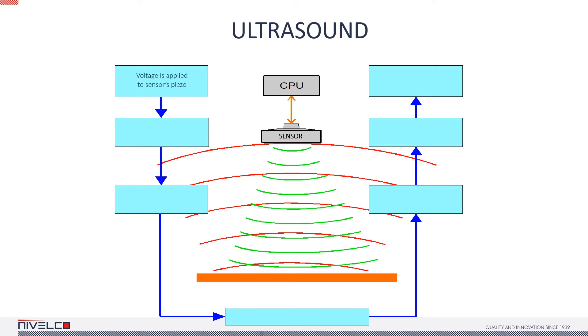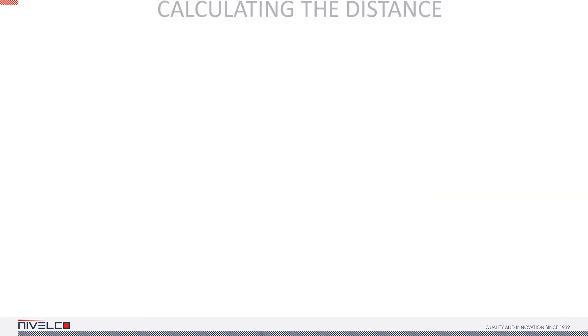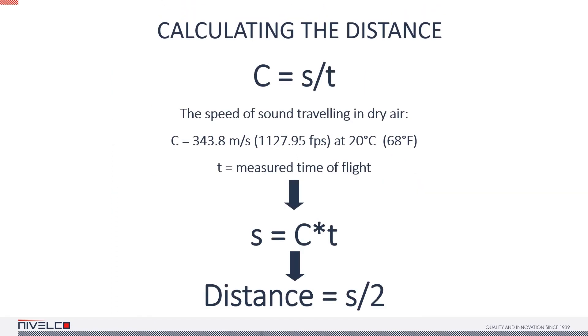Inside the device, voltage is applied to the sensor's piezo. The piezo starts to resonate and creates an ultrasonic burst which travels towards the target through the air. Then it's reflected from the surface of the target and travels back to the sensor. It hits the piezo and makes it resonate which creates a voltage pulse and the pulse is received by the processor which converts it into a signal. Once we know the travel time, it's easy to calculate the distance using C, the speed of sound in dry air at 20 degrees Celsius.